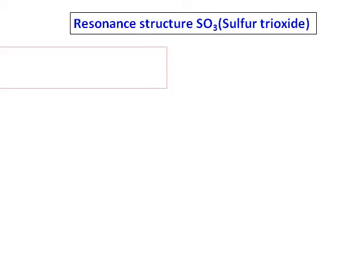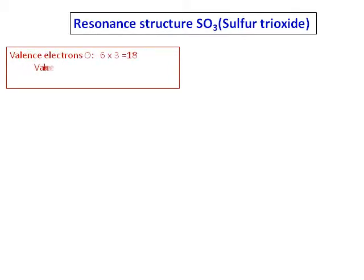The first thing we do is count the valence electrons. We have one sulfur and three oxygens, so the total valence electrons will be 6 plus 18, that is 24 valence electrons.